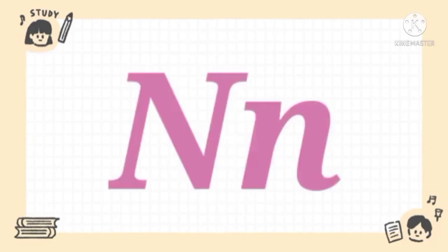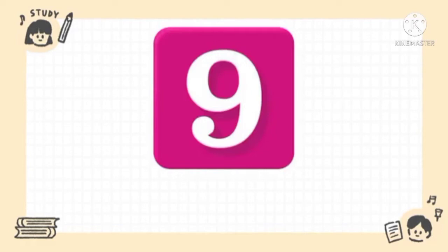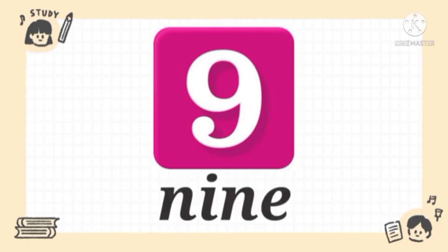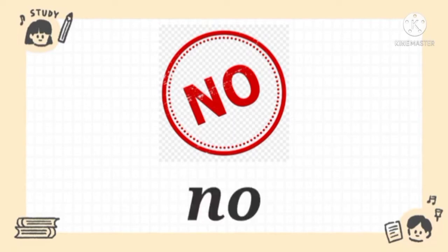Very good, children. What letter is this? Very good. The letter is N. And what sound does it make? Very good. The sound is N. Next, what word is this? Very good. The word is NO.